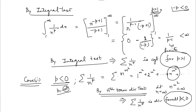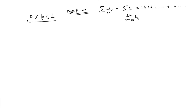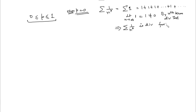The next case left is when P is between 0 and 1. When P equals 0, the series becomes the sum of 1's, which is divergent. We can apply the nth term divergence test: the nth term is 1, which is not zero. So by the nth term divergence test, the series 1 over n to the power P is divergent for P equals 0.